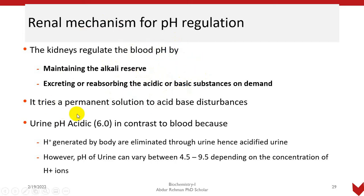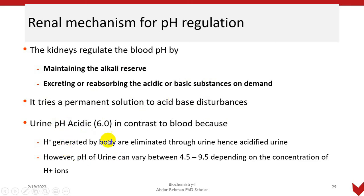The renal mechanism provides a permanent solution to acid-base disturbances. Before this, we have mechanisms such as the blood buffer system or the respiratory mechanism, but those are not permanent — they are temporary solutions used to regulate pH. The long-term permanent solution is the renal mechanism.